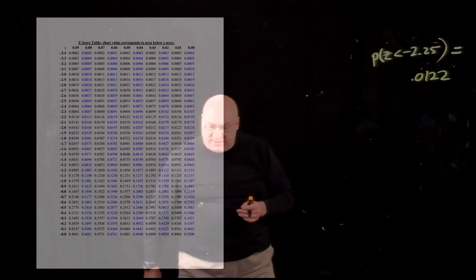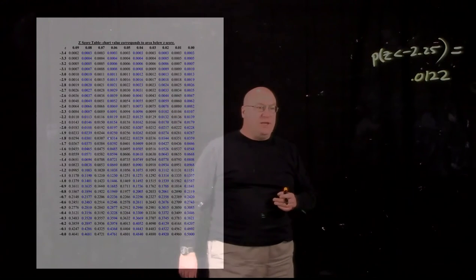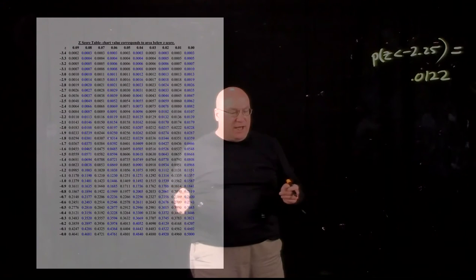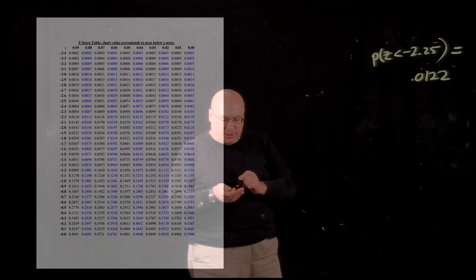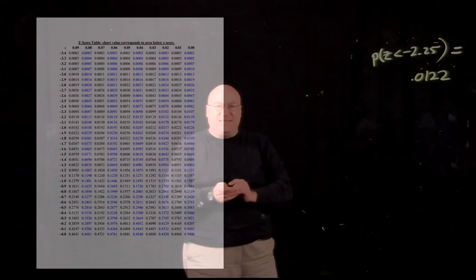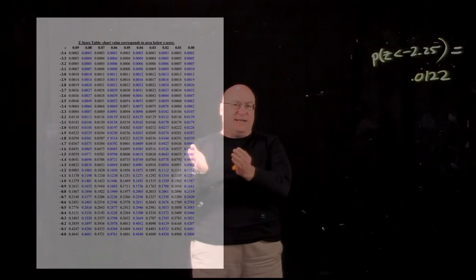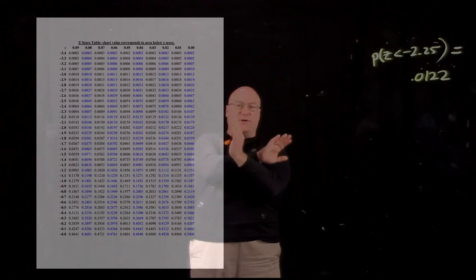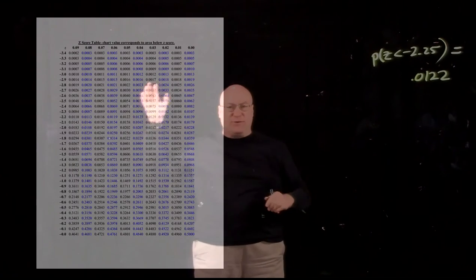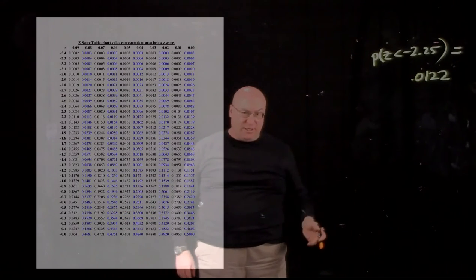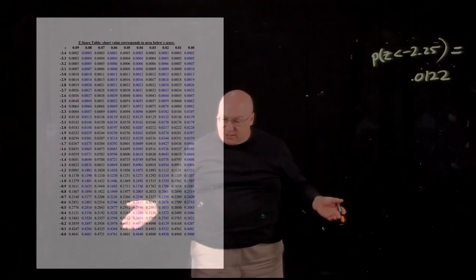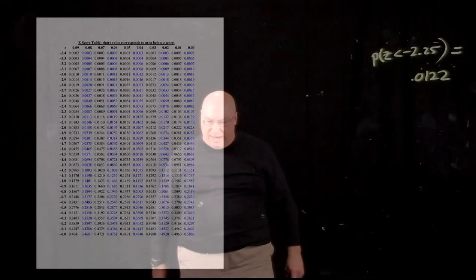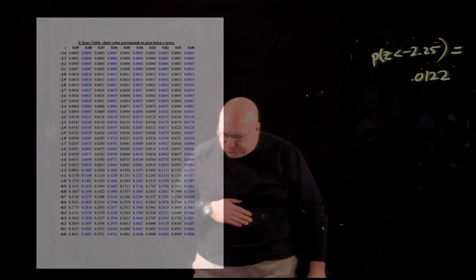Find P(Z ≤ 0). Go back and look at the bell curve — you don't even need the table. Zero sits right in the middle, and the curve is symmetric over the vertical axis, so half the probability is to the left and half is to the right. The answer is 0.5.